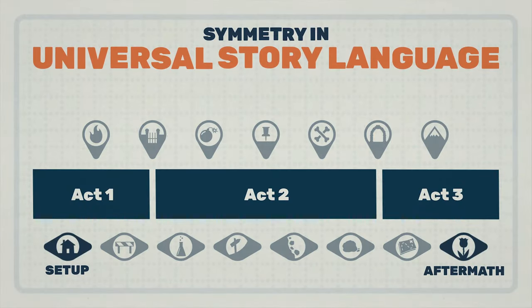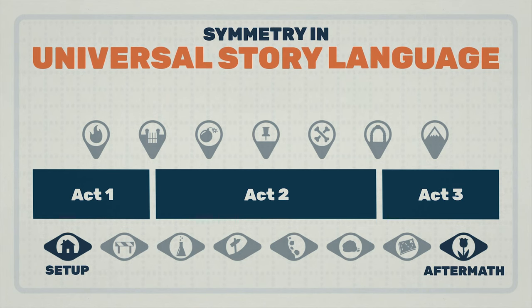Let's start with the beginning and the end. The setup and the aftermath are the only two phases outside of the main plot. They are both used to highlight aspects of the protagonist and the protagonist's world, and we understand the scope of the protagonist's growth through the differences of the setup and the aftermath. They also often take place in the same location, helping to highlight these differences.